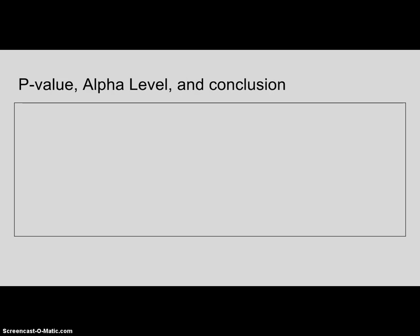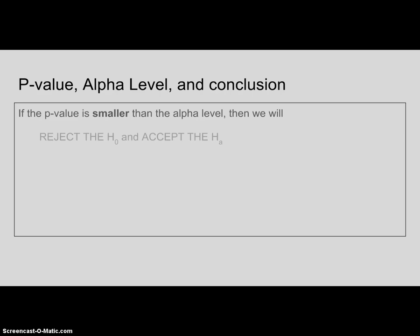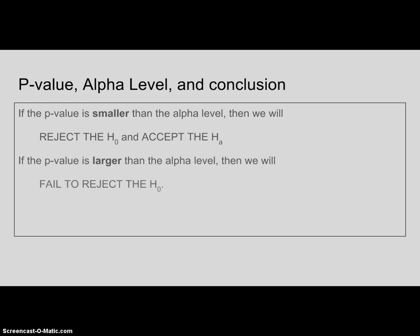To wrap up: if the p-value is smaller than the alpha level, we reject the null hypothesis. If the p-value is larger than the alpha level, we fail to reject the null hypothesis. I can't stress this enough — never accept the null hypothesis; you can only fail to reject it. In the next video, I will show you exactly how to do a one-proportion z-test step-by-step with an example. Thanks for joining me.